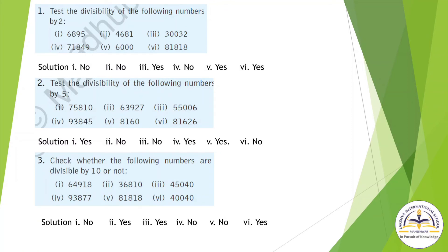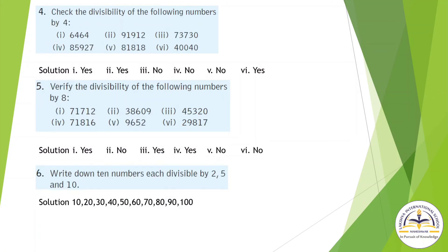Question number 4: check the divisibility of the following numbers by 4. Check the last two digits — if they are divisible by 4, write yes. Question 1: ends in 64, and 64 is divisible by 4, so yes. Next number ends in 12, which is divisible by 4, so yes. Next number ends in 30, which is not divisible by 4, so no.